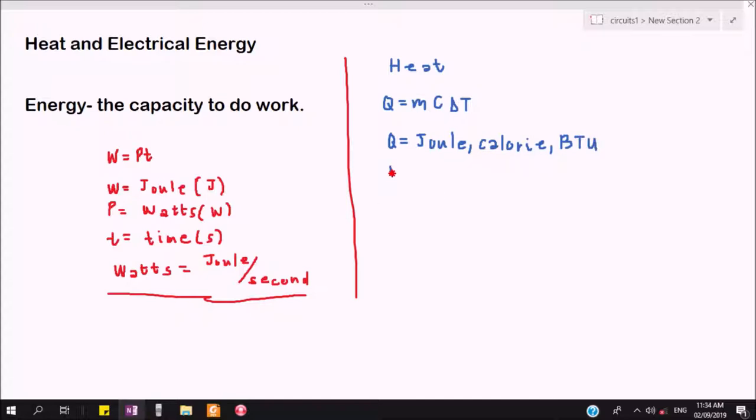For mass, mass could be kilogram, could be gram, could also be pounds. Delta T, which is the change in temperature, could be degree Celsius or degrees Fahrenheit, but in basic thermodynamics we have also Kelvin and degrees Rankine.